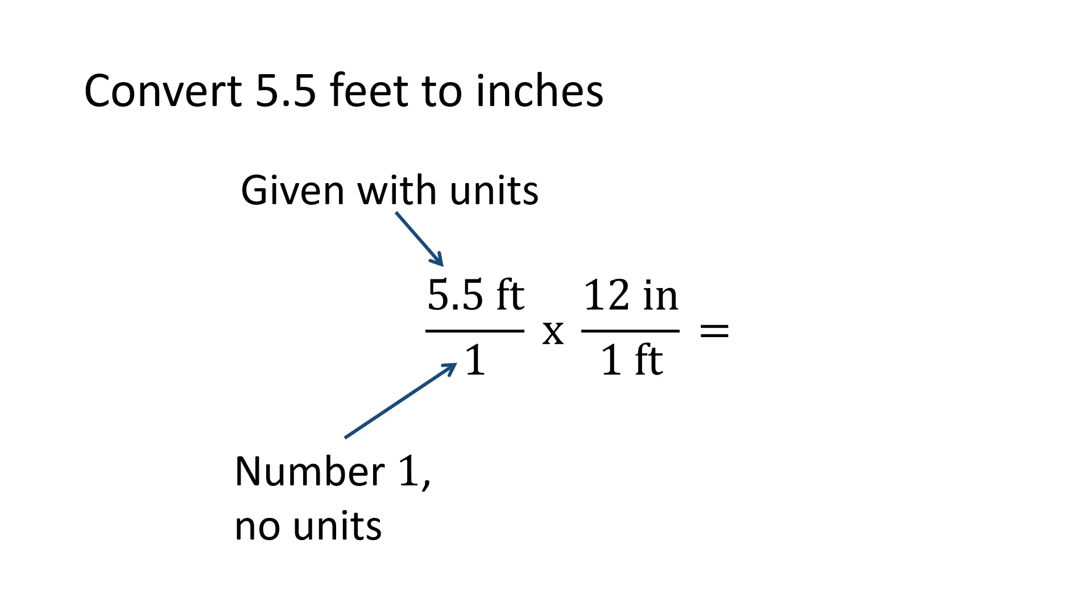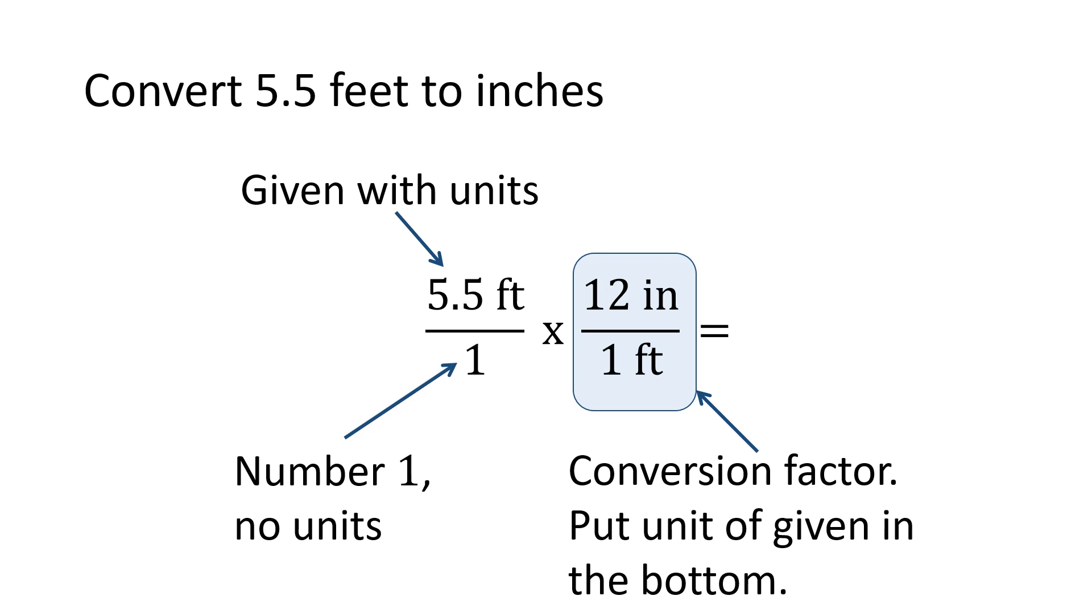And our basic process was to start by writing whatever you're given with its unit and sticking it over one. That's just to make it look like a fraction. Then we're going to multiply it by a second fraction. And with the second fraction, we're going to call it a conversion factor. The top and the bottom of the conversion factor need to be two different ways of expressing the same quantity. So if you take a standard ruler, we could call that ruler either one foot or 12 inches. And the way you decide which one goes in the bottom is that the one you put in the bottom needs to match the units of what you were given. If you do that, then the units will cancel out as you work the problem. So, for instance, here we have feet in our given, and feet down in the bottom of the conversion factor to cancel out. Then that only leaves the units of inches, which are what we're trying to find. So the units of the target, the thing we're trying to find, will go on top.